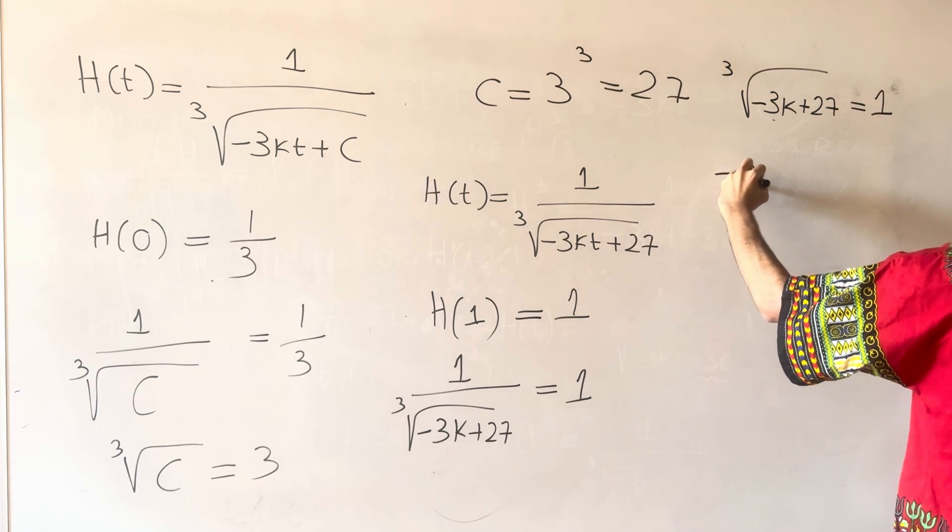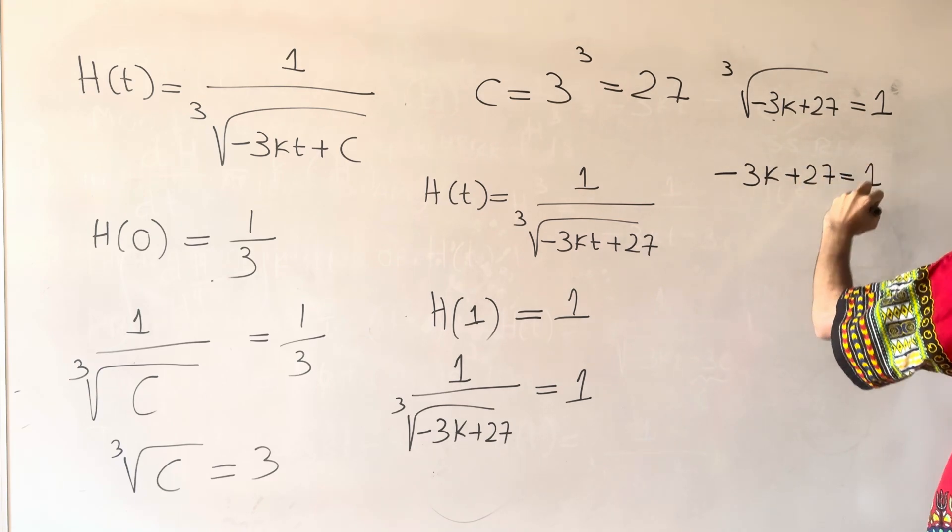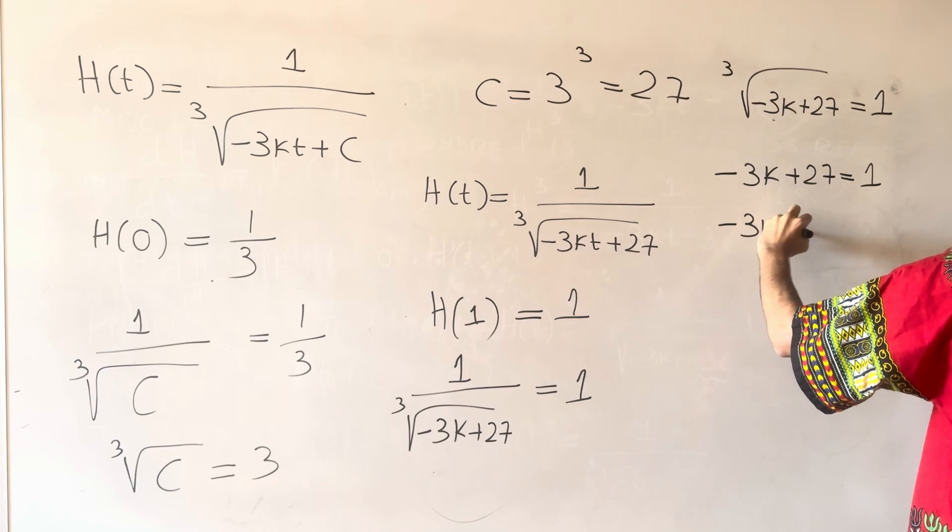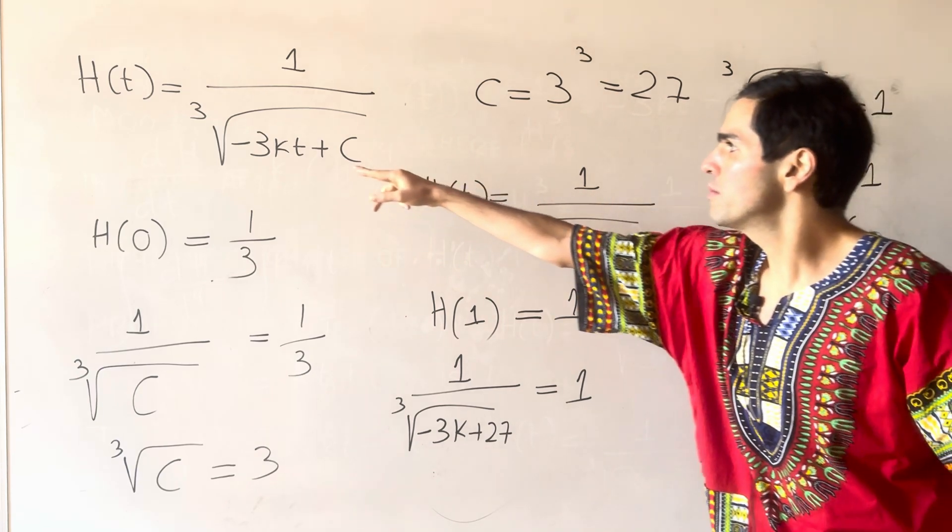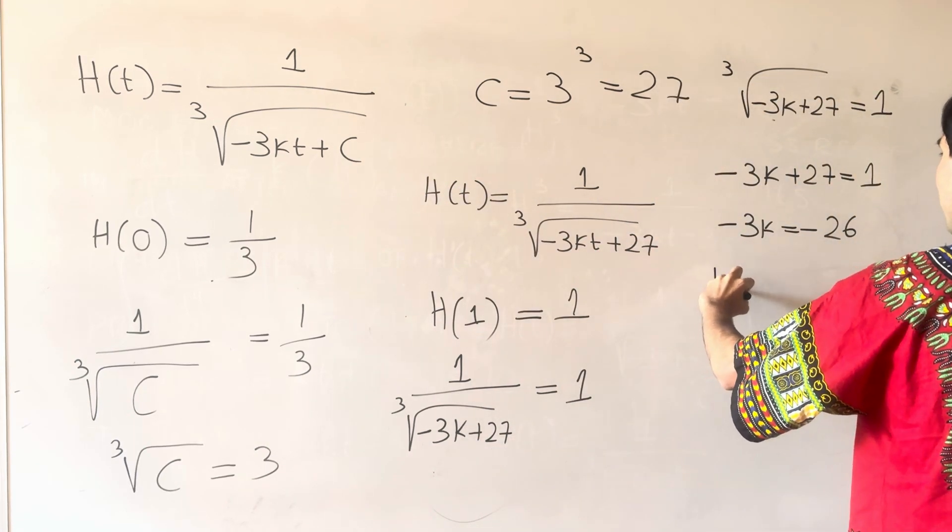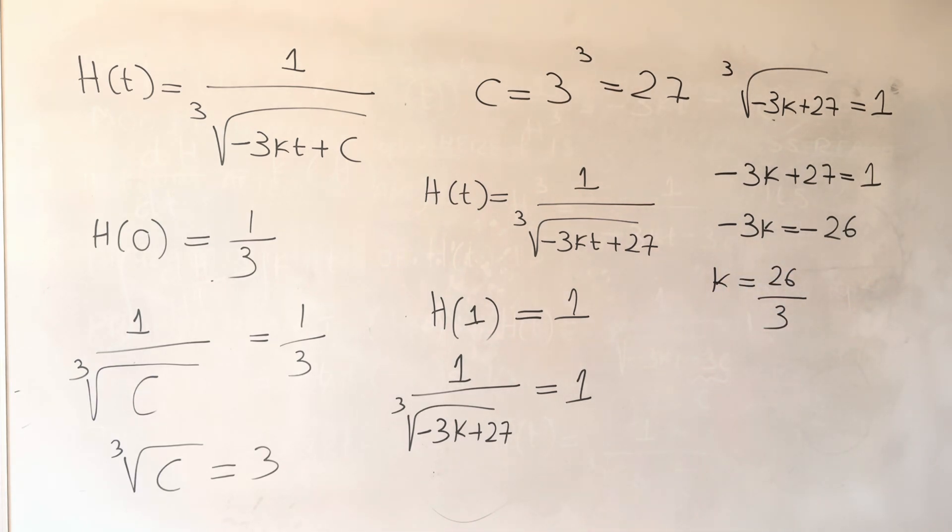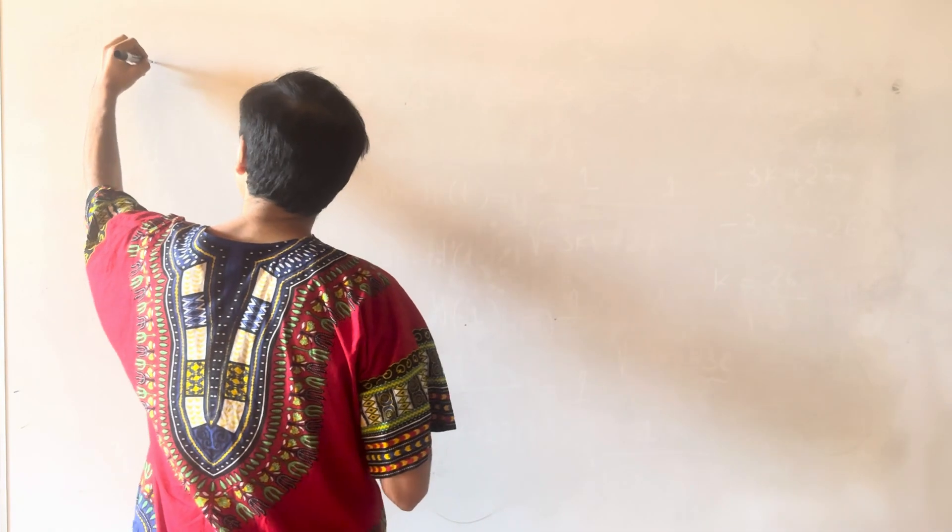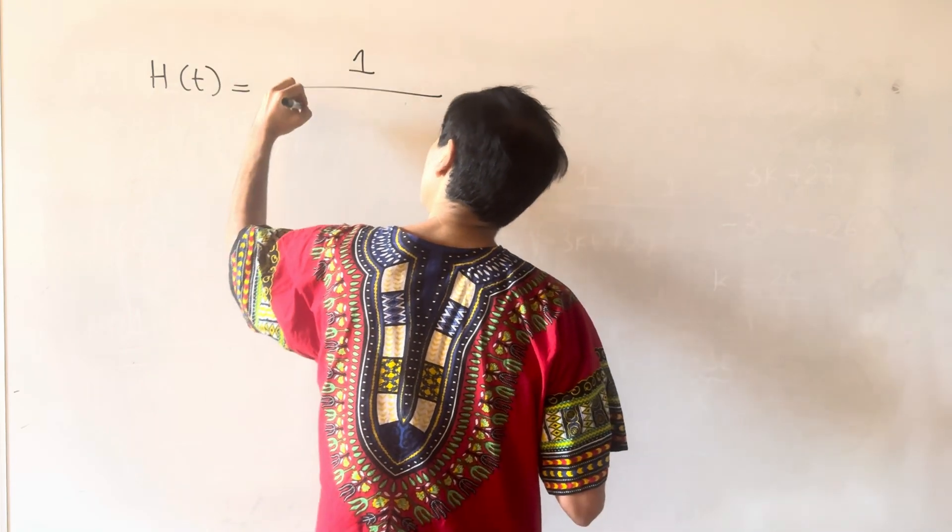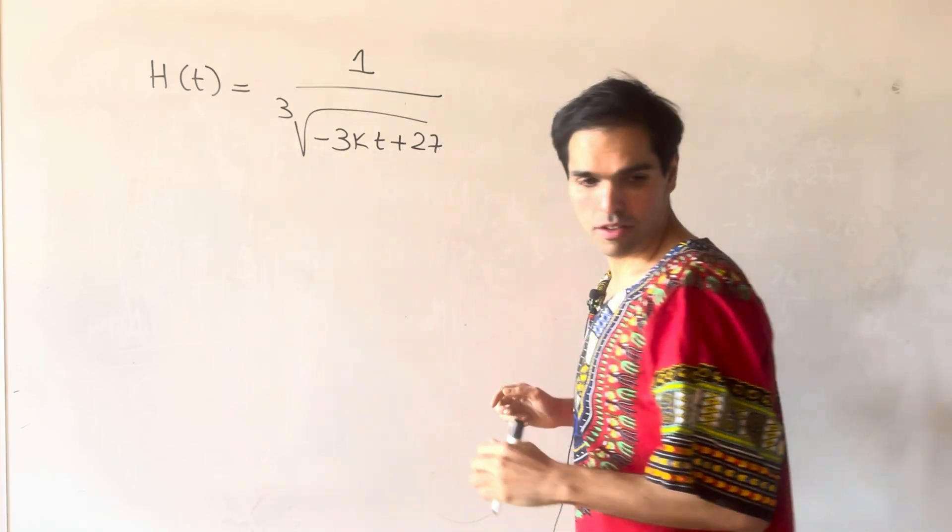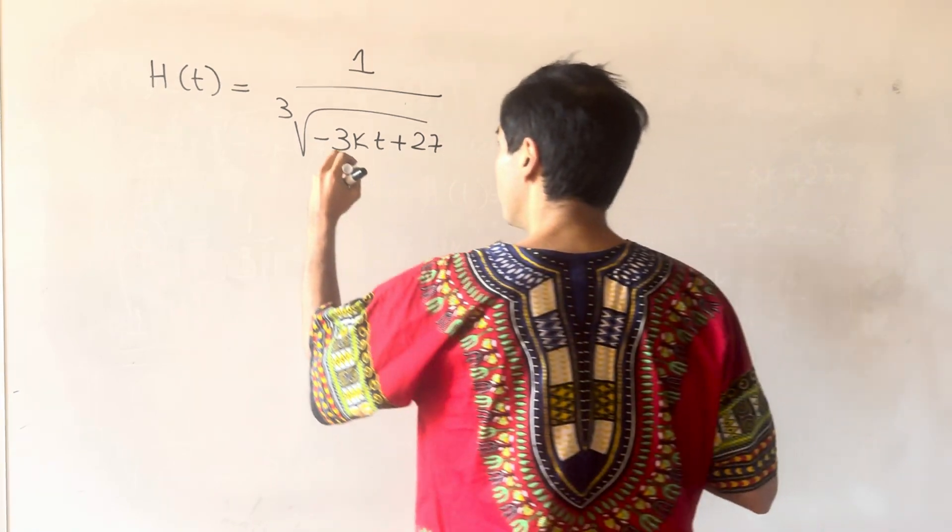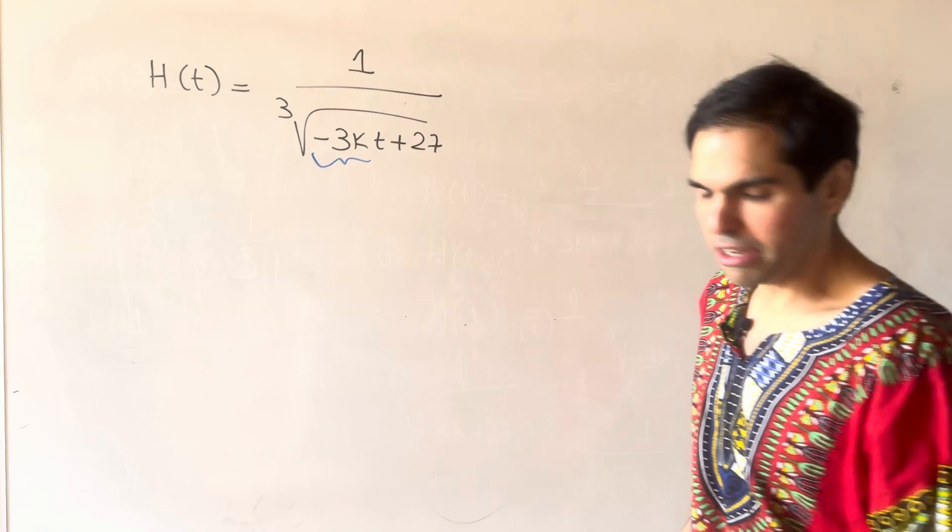So, then cube everything. So, minus 3K plus 27 is 1. So, minus 3K is minus 26. Again, strictly speaking, that's enough, because we can plug this here. But, just from completeness, we get K is 26 over 3. And that's good, because those are all the ingredients that we need to plug in for H. Because, remember, H of T was 1 over cube root of minus 3KT plus 27. But, minus 3K, I believe we found this to be equal to minus 26.